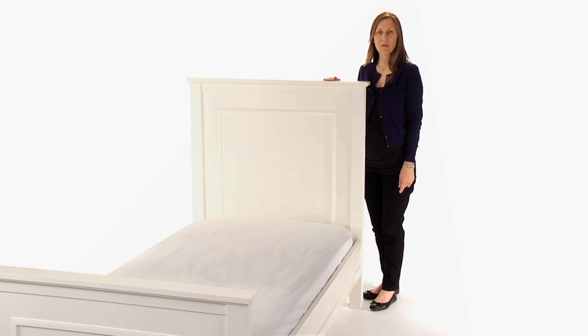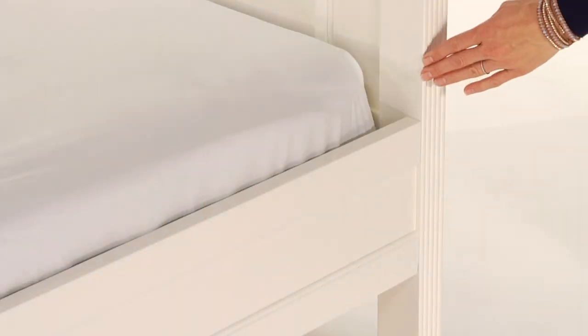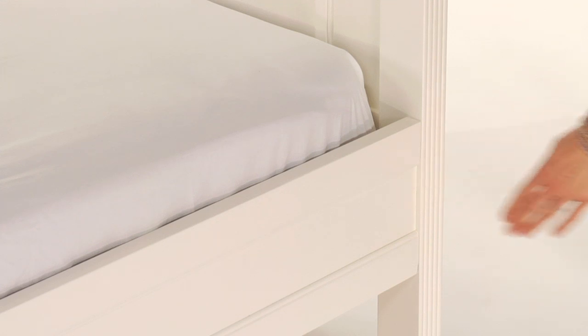The bed's hook and rail construction makes assembly easy. The mattress platform can be raised to accommodate our optional trundle or lowered to create a comfortable height for small children.